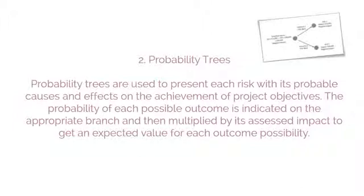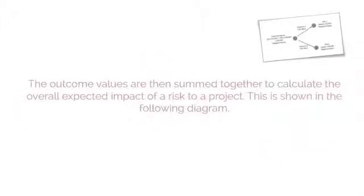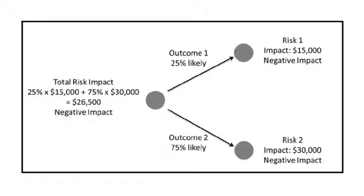Probability trees are used to present each risk with its probable causes and effects on the achievement of project objectives. The probability of each possible outcome is indicated in the appropriate branch and then multiplied by its assessed impact to get an expected value for each outcome possibility. The outcome values are then summed together to calculate the overall expected impact of a risk to a project, as shown in the following diagram.